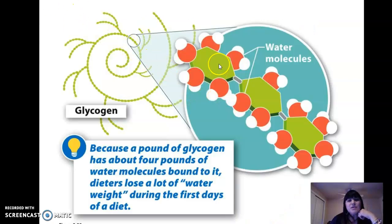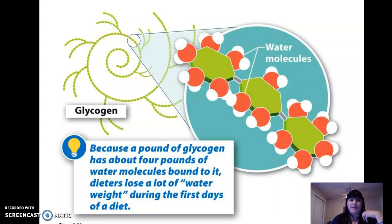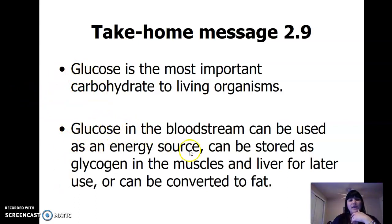Here's a simple sugar glucose and a bunch of chains of glucose — that makes glycogen. In animals, glycogen is the storage form of glucose and it's a polysaccharide — poly means many. Glucose in the bloodstream can be used as an energy source or stored as glycogen in the muscles and liver, or converted to fat.